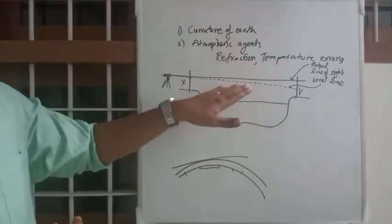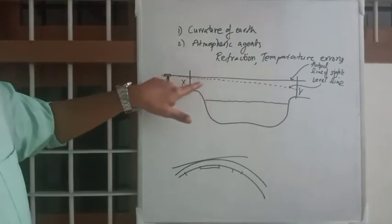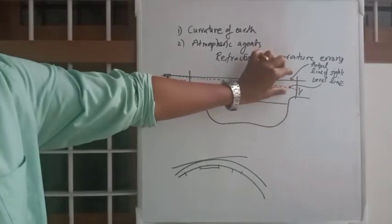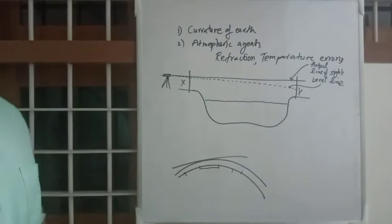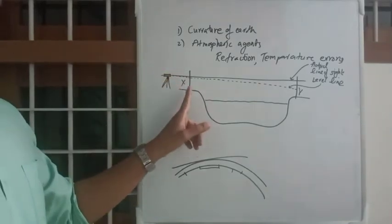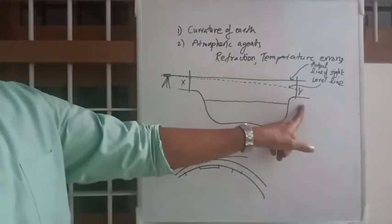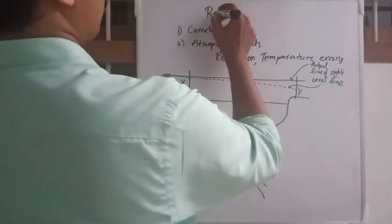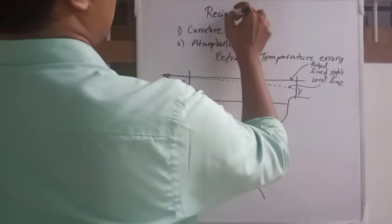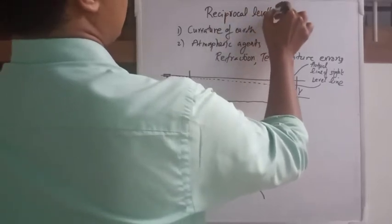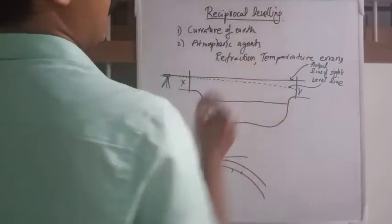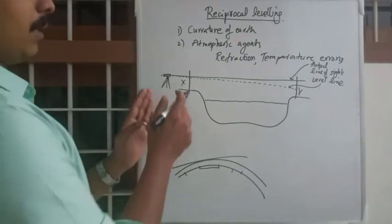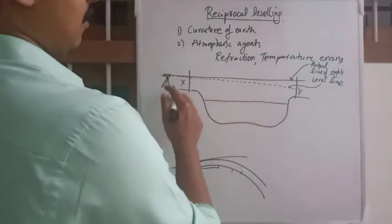The actual line of sight will vary with respect to the level line by a particular amount. So how will you correct this? How can you find out the actual level difference between X and Y? The solution is very simple, and that is the topic of today: reciprocal leveling. As the name indicates, we will reciprocate the same scenario.